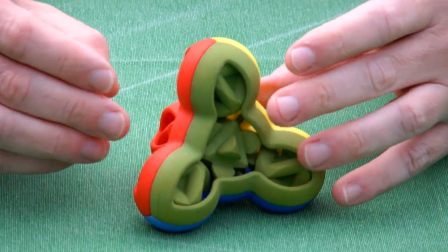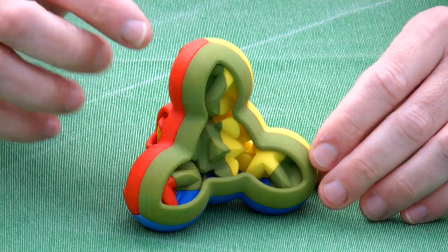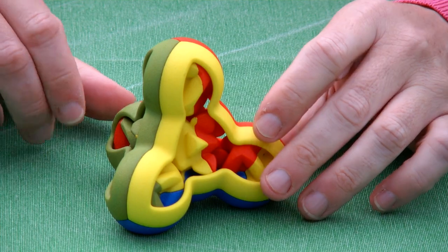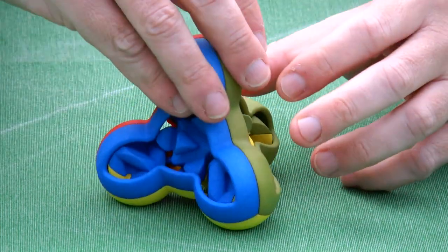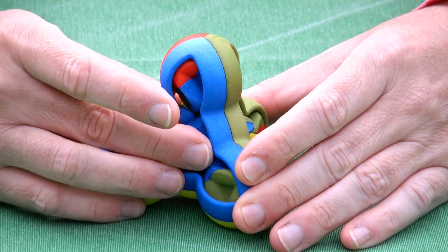The way that the puzzle works is that you can rotate the ball in the middle, for instance like this, and then we see that it has made a rotation. Perhaps we can make another rotation by putting it like this and then turning it here.